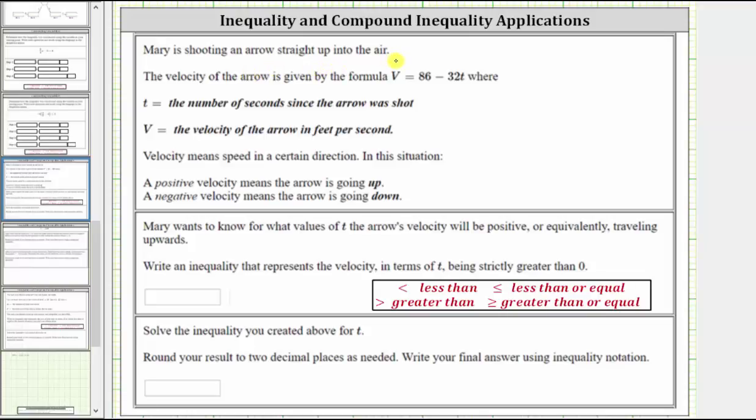Mary is shooting an arrow straight up into the air. The velocity of the arrow is given by the formula v equals 86 minus 32t, where t equals the number of seconds since the arrow was shot, and v equals the velocity of the arrow in feet per second. Velocity means speed in a certain direction. In this situation, a positive velocity means the arrow is going up, and a negative velocity means the arrow is going down. Mary wants to know for what values of t the arrow's velocity will be positive or equivalently traveling upwards. Write an inequality that represents the velocity in terms of t being strictly greater than zero.